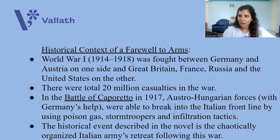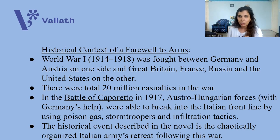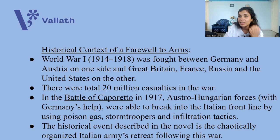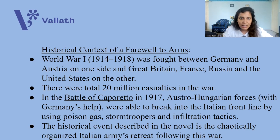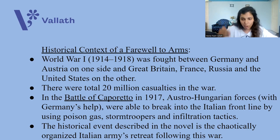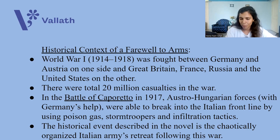Basically, Austria and Hungary became stronger against Italy. Austria and Hungary had the support of Germany, while Italy had the support of Britain, America, France, and Russia. The historical event discussed in this novel is the chaotically organized Italian army's retreat following the Battle of Caporetto.